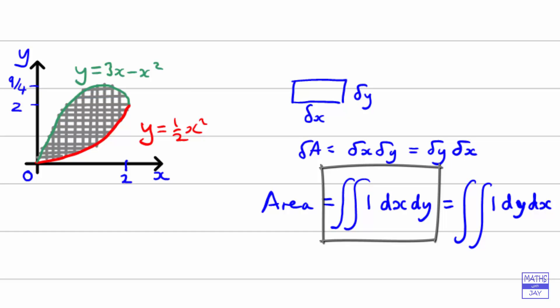So what we're going to do is split the area into two. Let's draw the line in to show how we're doing that. That deals with one problem — we'll be looking at two separate areas. The other problem is that in our inner integral we'll need limits as x equals something and x equals something else, but both of our equations are given as y equals something. So we need to do some rearranging to make x the subject.